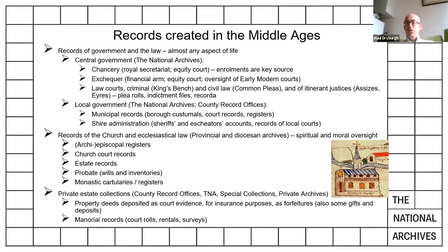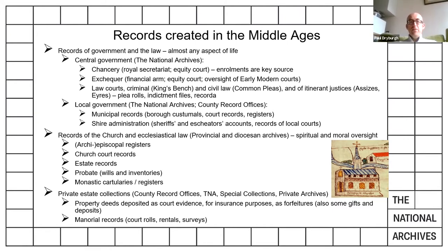Church records tend to be held at provincial and diocesan archives, which often overlap with county record offices. For private estate collections, these tend to be in county record offices or still in private hands. The old Historical Manuscripts Commission, which became part of the National Archives in 2003, has that function, and there are lots of lists of private archives in the Historical Manuscripts catalogues. For records of manors — things like court rolls, rentals, surveys — any manors which ended up forfeited to the Crown often have records held at the National Archives. I'll talk in more detail later about what the records are in manorial documents registries.